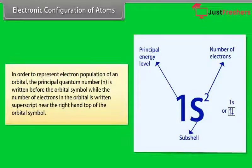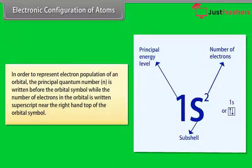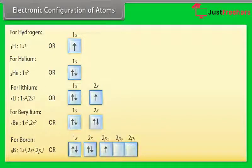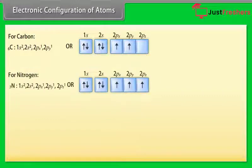Hund's Rule of Maximum Multiplicity states that the pairing of electrons in the orbitals of a particular subshell (p, d, or f) does not take place until all the orbitals of the subshell are singly occupied. Moreover, the singly occupied orbitals must have electrons with parallel spins. Electronic Configuration of Atoms: To represent the electron population of an orbital, the principal quantum number N is written before the orbital symbol, while the number of electrons in the orbital is written as a superscript. For example, two electrons in the s orbital of the first energy level is written as 1s². Electronic configurations are given for hydrogen, helium, lithium, beryllium, boron, carbon, nitrogen, and oxygen.